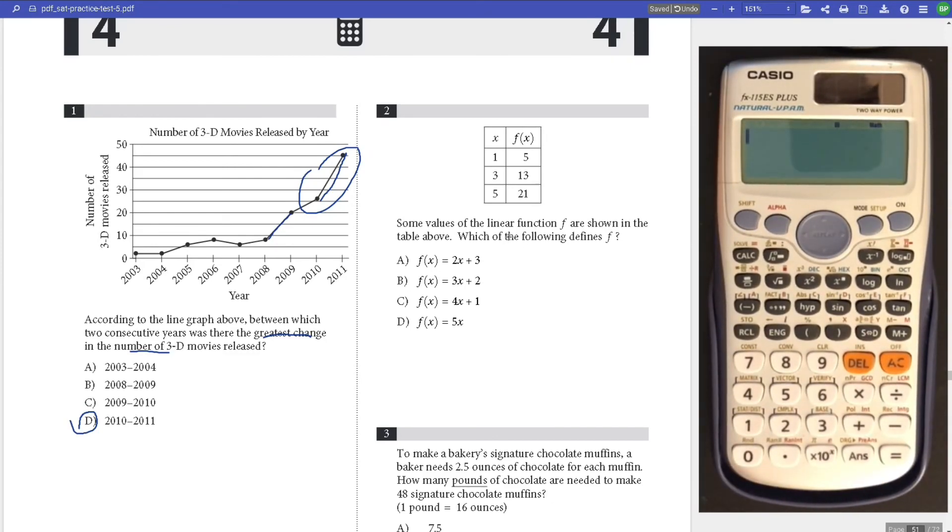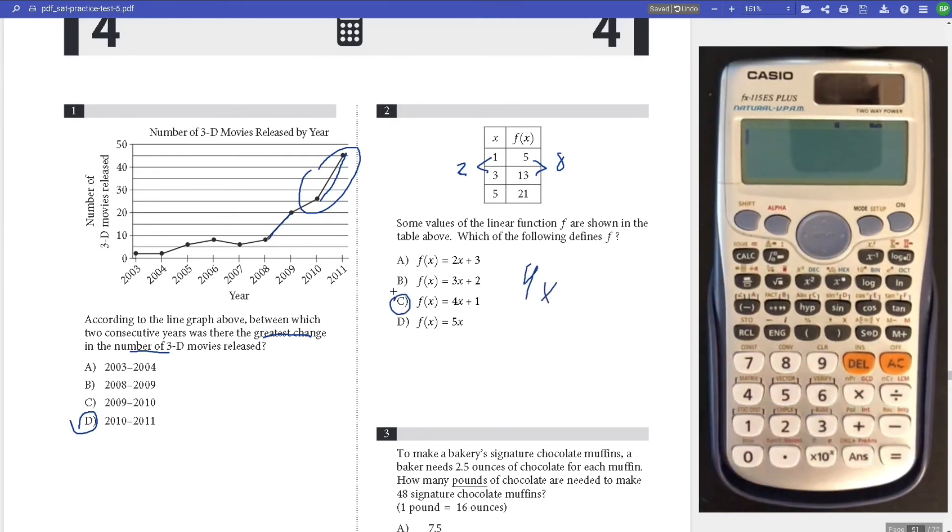Number 2, we have this chart. It shows some values for function F. Let's look at the slope first. The difference between 13 and 5 is 8, and the difference between 1 and 3 is 2. 8 divided by 2 is 4. The slope is 4x.